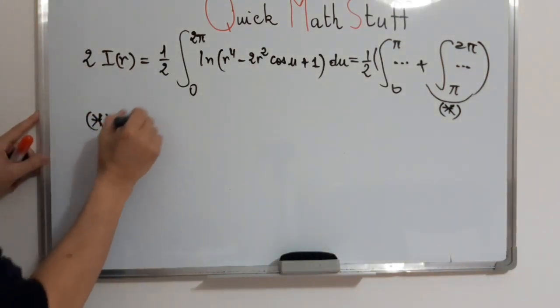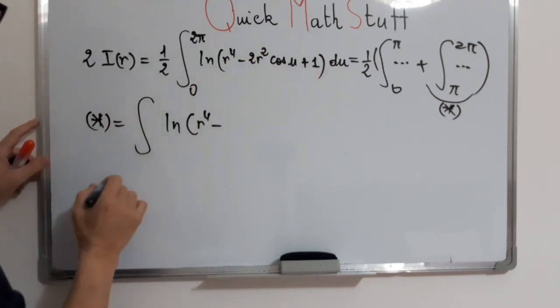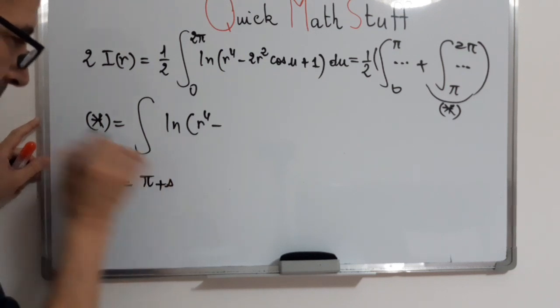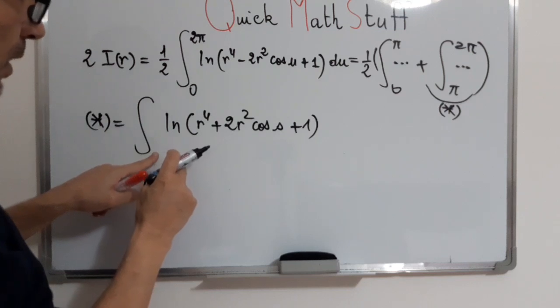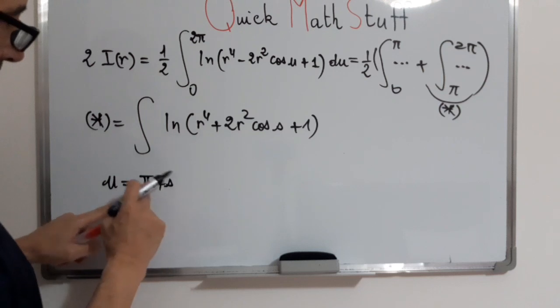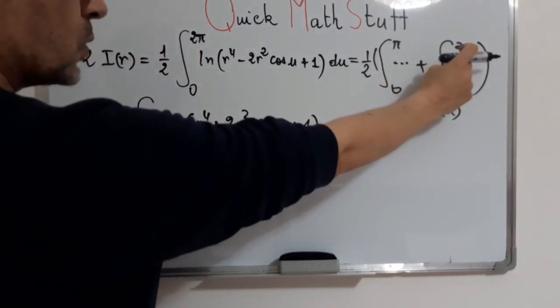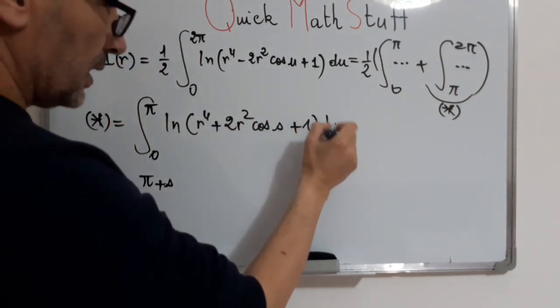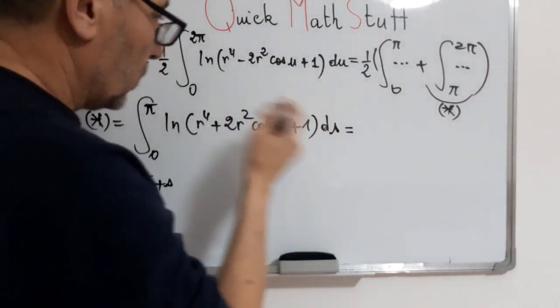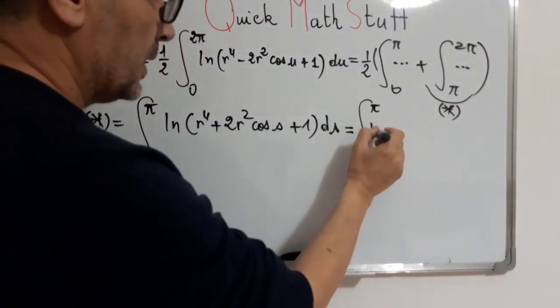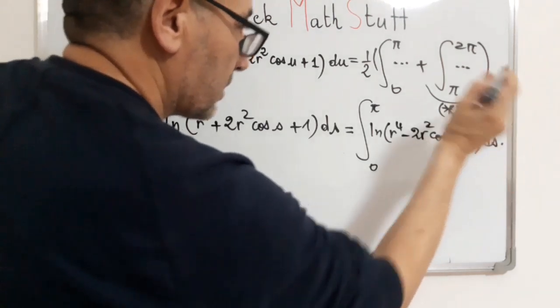This term, ln of r to the fourth by simple variable change where u equals π plus s, plus 2r squared cosine s plus 1. The bounds become here, when u equals π it becomes 0, and when it equals 2π it becomes π. And by the fact that the function is even in terms of the parameter, this is also equal to integral from 0 to π of ln of r to the fourth minus 2r squared cosine s plus 1 ds.